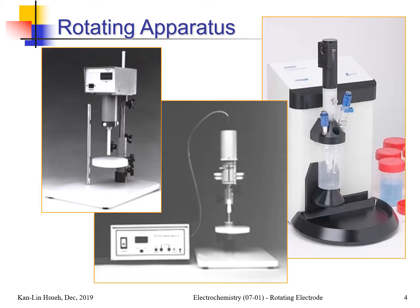This is a typical rotating apparatus — here is an electric motor, a stepping motor, like this Pine instrument. This other one is also an electric motor; its advantage is that it's much smaller so you can place a beaker directly under it in a more compact setup. For this larger one, you need an additional controller to control the motor's rotating speed.